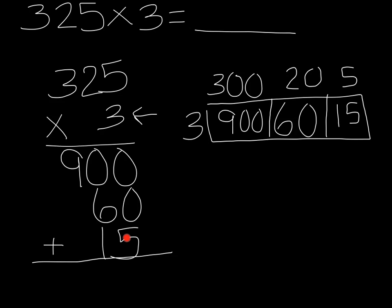0 plus 0 plus 5 equals 5. 0 plus 6 plus 1 equals 7. And the 9 comes down. So the answer to our problem is 975. And that is how we use the area model to multiply 3-digit numbers by 1-digit numbers.